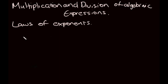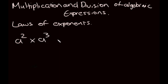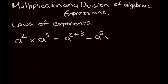The most common ones we're going to have are the first and second law. The first law is: if we're given two bases that are the same and we multiply them together, we will add the exponents. So we know that a² × a³ will be 2 plus 3, which gives us a to the power of 5.